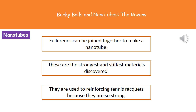We can join fullerenes together to make a structure called a nanotube. What's important about these is that they're the strongest and stiffest materials discovered to date. At the moment we use them as a reinforcing material inside tennis rackets — and that's one of those common exam questions: the use of nanotubes is reinforcing tennis rackets.